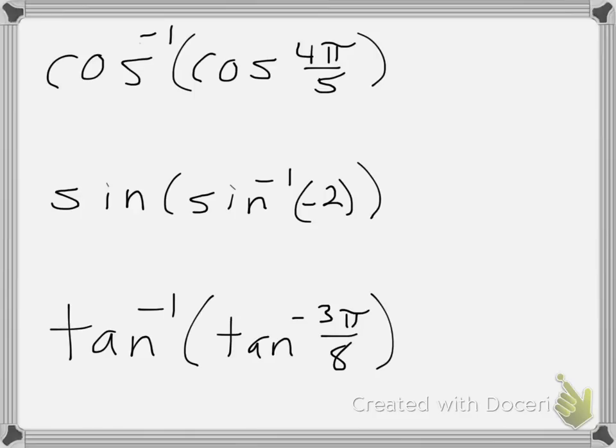So when that's, again, that's the only thing we need to check, really. Since this 4π over 5 is in our appropriate interval, then the answer is just 4π over 5. Now on to our next one.